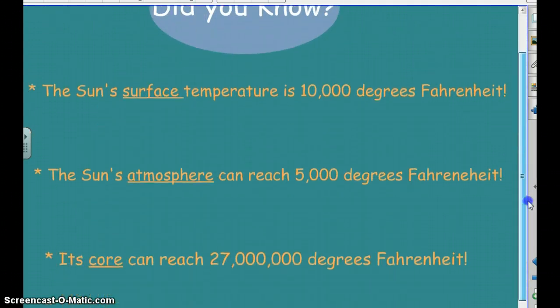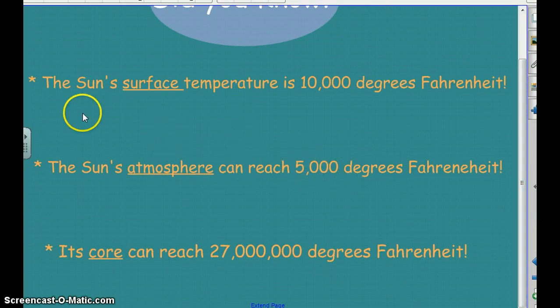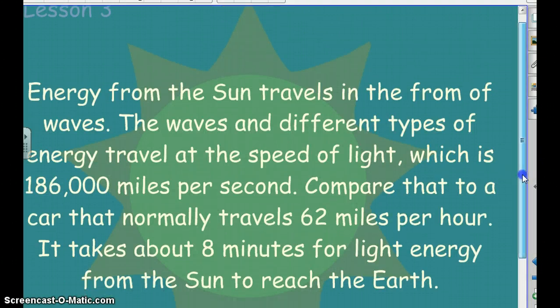Now, some facts about the sun. The surface is only about 10,000 degrees. The atmosphere of the sun can reach about 5,000 degrees. The core is where all the action is happening in the sun, that's 27 million degrees.